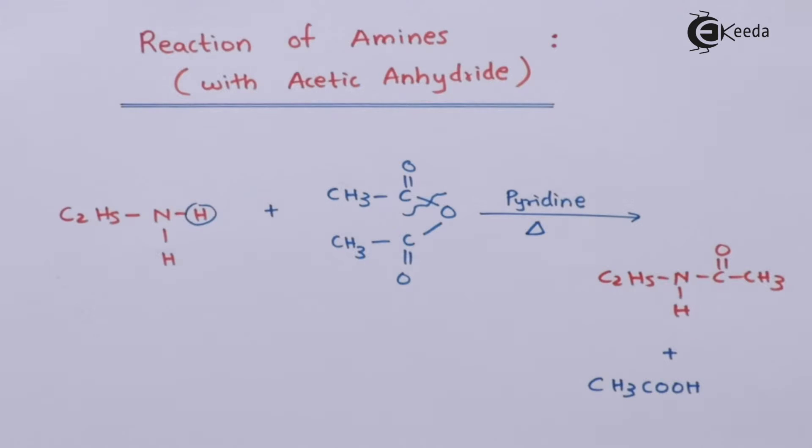So this is another alternative method to prepare an amide. But here we are using acetic anhydride, that's the reason the byproduct obtained is acetic acid. But in the previous reaction, it was HCl that was removed as a byproduct. So this was a reaction of primary amine with acetic anhydride.